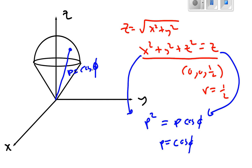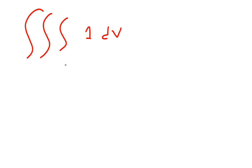That's phi, not theta. Phi itself is bounded from the z-axis down to this line, which is 45 degrees or pi over 4 radians. So converting this integral into spherical coordinates is actually pretty easy. We're trying to find the triple integral of 1 dV over the ice cream cone region.